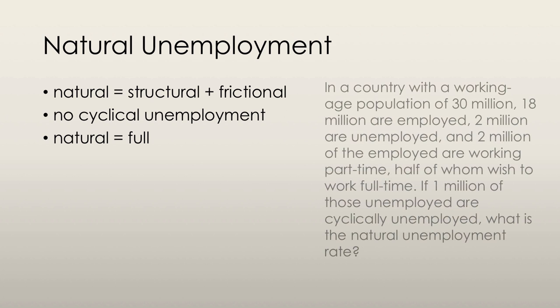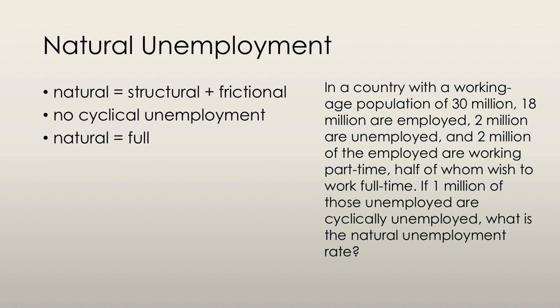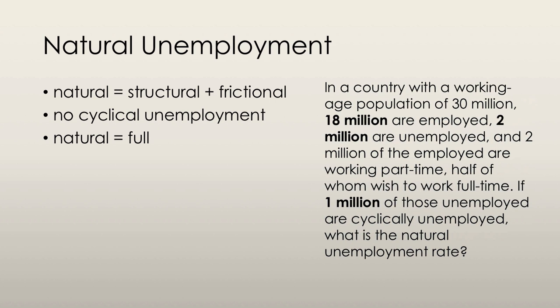Let's look at an example. We have a country with a working age population of 30 million. 18 million of these people are employed, 2 million are unemployed, and 2 million of the employed are working part-time, half of whom wish to be working full-time. If 1 million of those unemployed are cyclically unemployed, what is the natural unemployment rate? The key figures are: 18 million employed, 2 million unemployed, and 1 million of those who are cyclically unemployed.